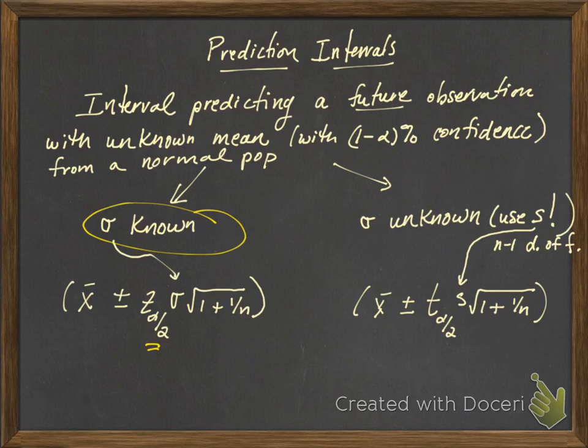If sigma is unknown, we're going to actually have to calculate s, or the sample standard deviation unless it's given, and we'll use a t-score with n minus 1 degrees of freedom where n is the size of our sample. All right, so let's look at two examples, one using each form.